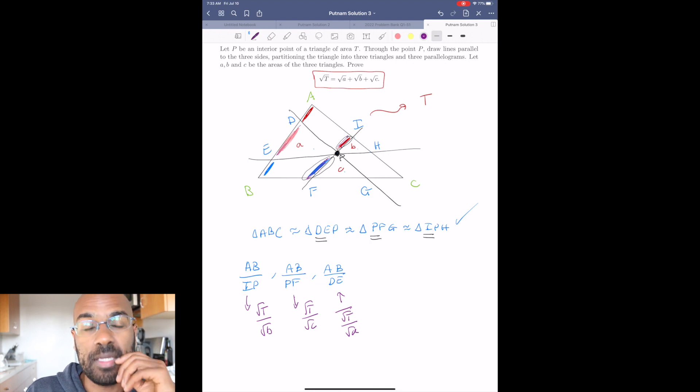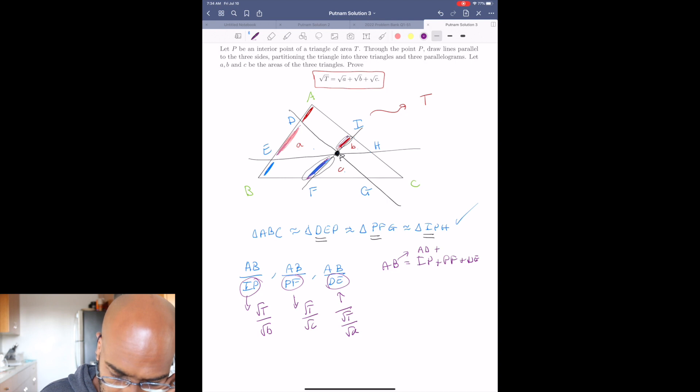But here's the thing. So AB itself is actually the sum of these lengths. So if we look at AB, it's going to be the same as IP plus PF plus DE. Again, by this observation, AB is actually AD plus DE plus EB, and this is equal to this, and this is equal to this.